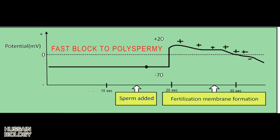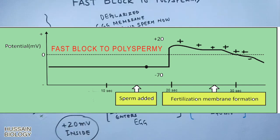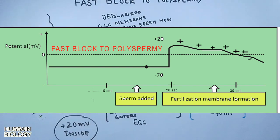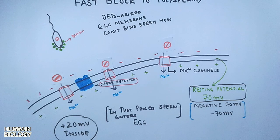In this graph we can see the electrical potential prior to sperm binding and after sperm entry. When the sperm binds and enters the cell, the potential inside the egg rises from minus 70 millivolts up to plus 20 millivolts, as shown in the graph. This is how the fast block to polyspermia works in sea urchins.